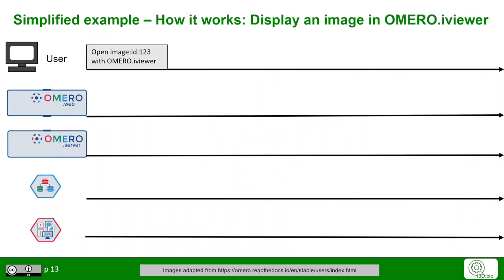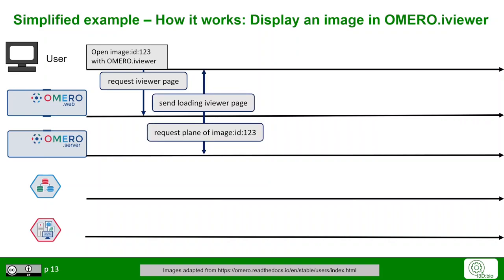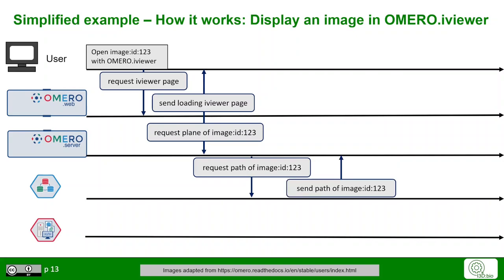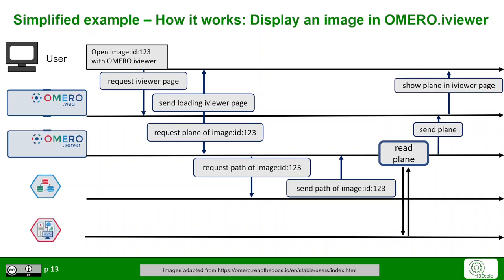In a second example, let's look at how the platform displays an image in OMERO iViewer. The user wants to open an image with a specific ID. It requests the iViewer page, and OMERO Web sends the loading page for the iViewer while also requesting the specific image plane. OMERO Server retrieves the file path from the relational database, which sends the path to the image. OMERO Server then reads the image plane from the actual file storage location and sends the plane to OMERO Web, which displays it to the user in the iViewer page.